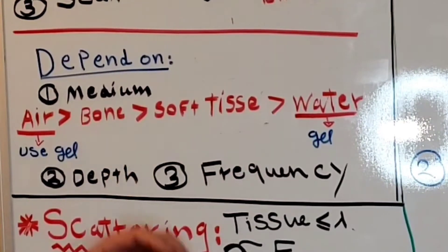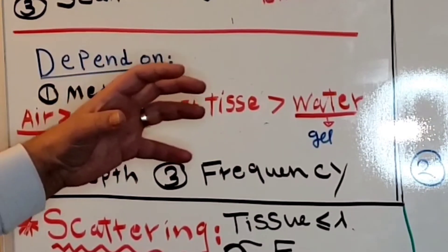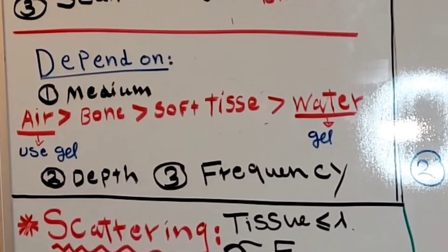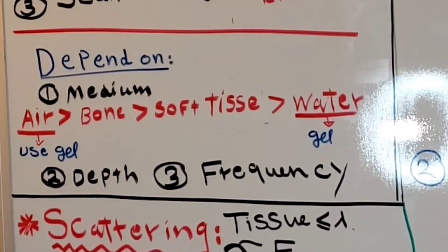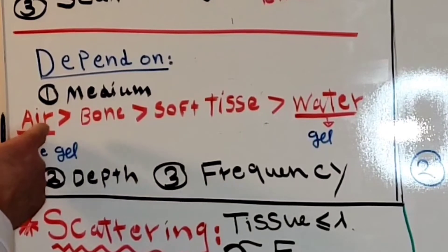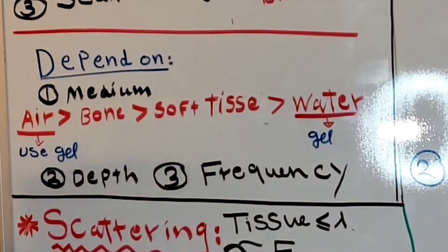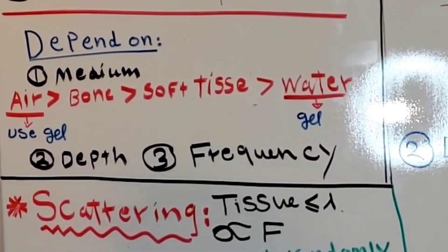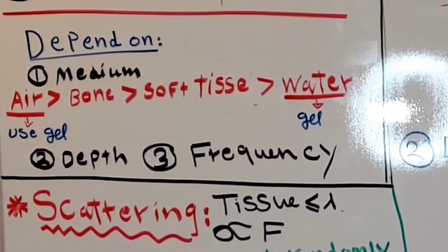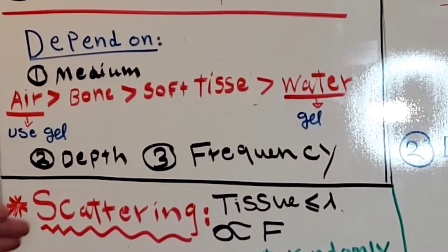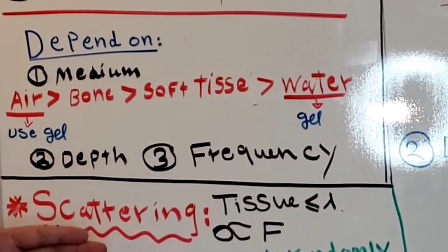We can use a full urinary bladder as an acoustic window to look at the uterus. Also, because air has high attenuation, we use gel to fill the gap between the transducer and the skin. We also use gel because it has an acoustic impedance that matches between the transducer's matching layer and the skin.